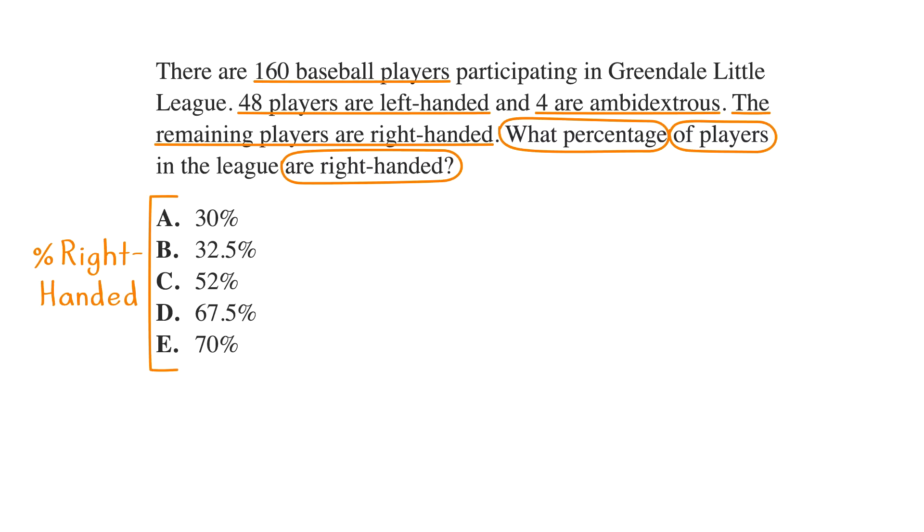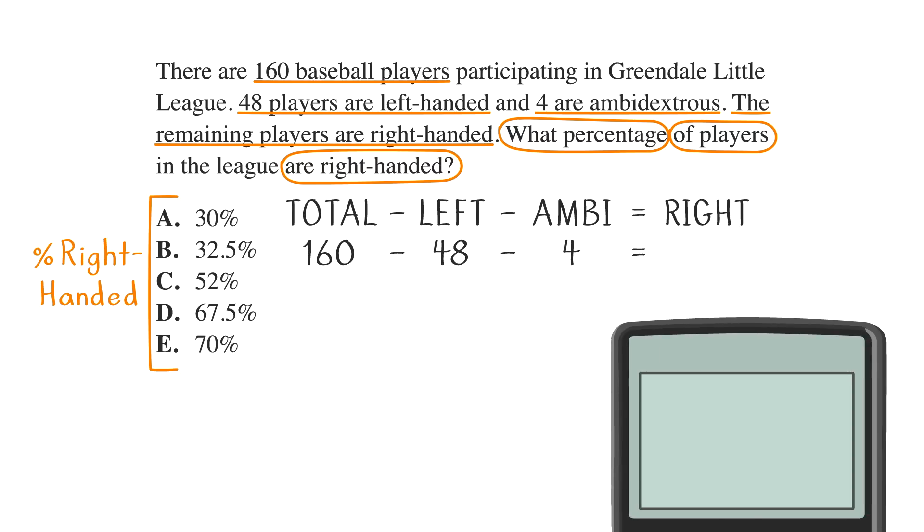The question is asking us for the percentage of right-handers. So, the first thing to do is to figure out how many righties there are. We know there are 160 baseball players total, 48 lefties, and 4 ambidextrous players. The remaining players are righties, and we can find their number by subtracting the left-handed and ambidextrous players from the total. Take out our calculator and we see that 160 minus 48 minus 4 equals 108.